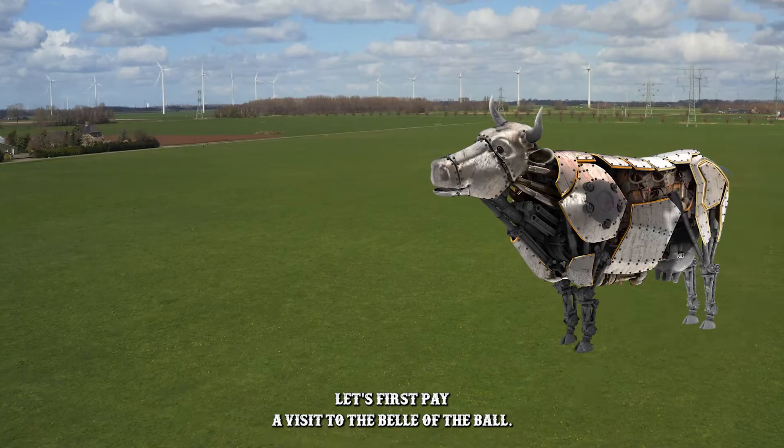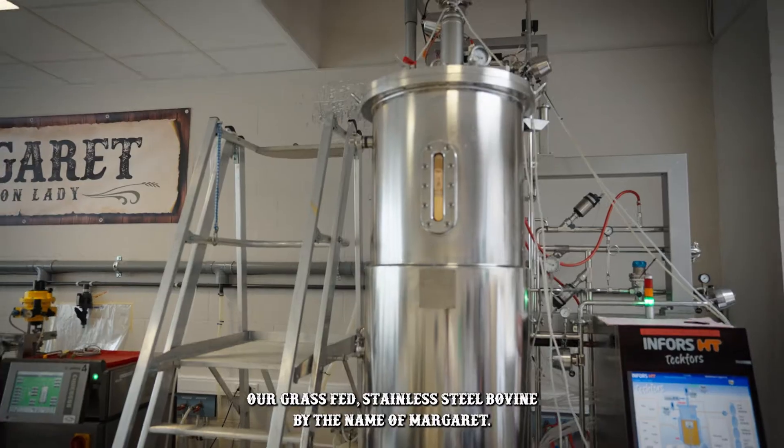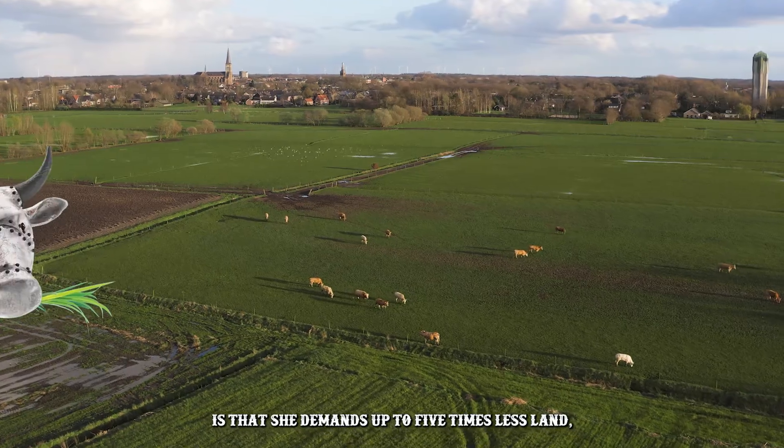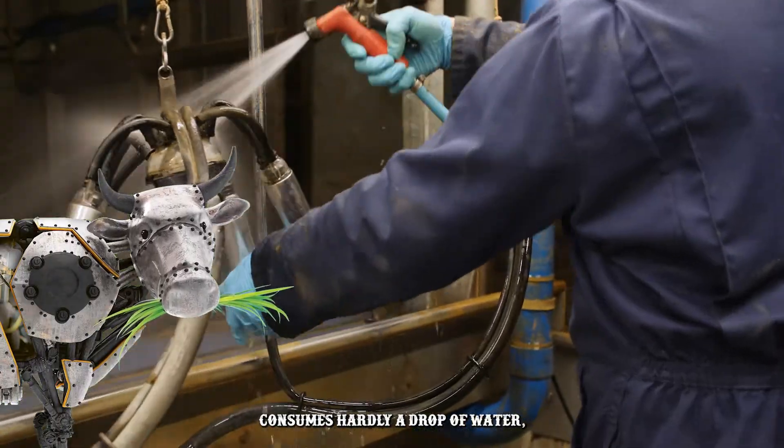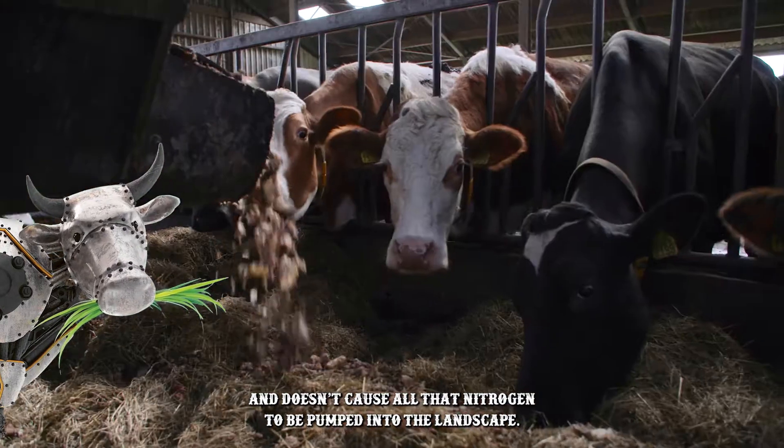Let's first pay a visit to the Belle of the Ball, our grass-fed stainless steel bovine by the name of Margaret. The difference between her and regular cows is that she demands up to five times less land, consumes hardly a drop of water, and doesn't cause all that nitrogen to be pumped into the landscape.